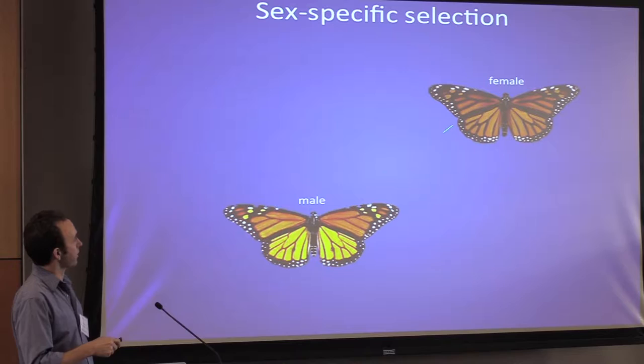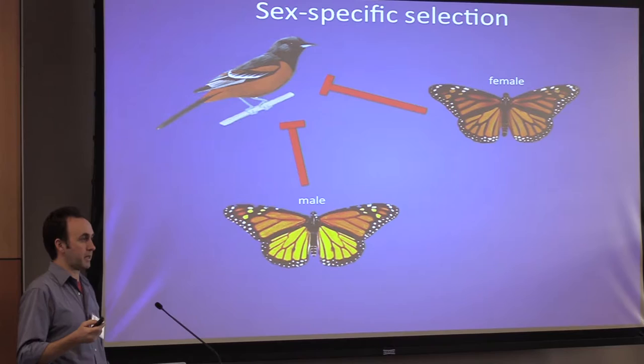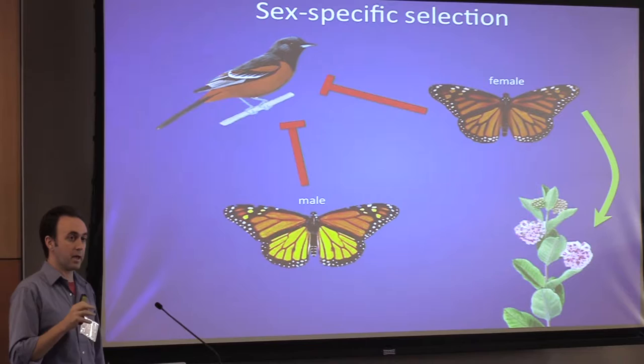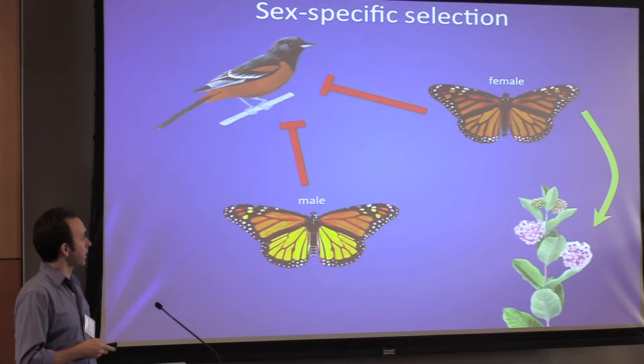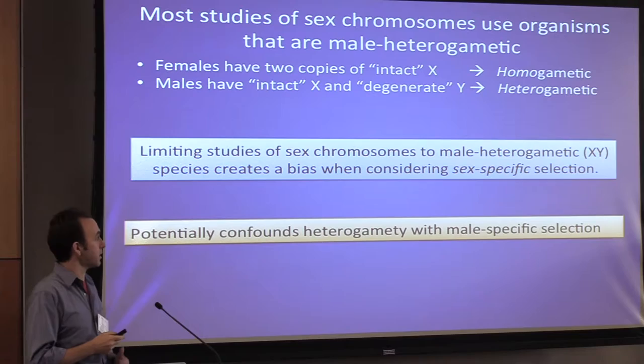To give a simple cartoon example of sex-specific selection: consider monarch butterflies, where males and females look a little different. Most selective pressures are shared — for instance, both want to avoid being eaten by Orioles. But when it comes to reproductive processes, females need to lay eggs and find milkweed as a host plant, so they face much stronger selection on that. Males don't worry about milkweed, but they need to find females — so there's strong selection for males to locate females. This illustrates sex-specific selection.